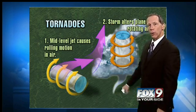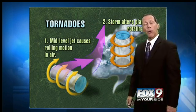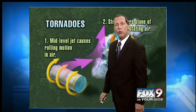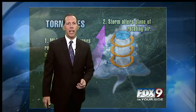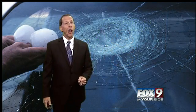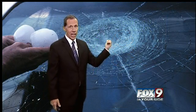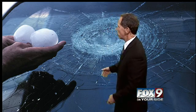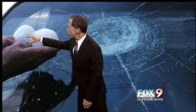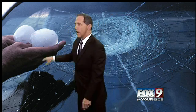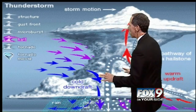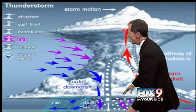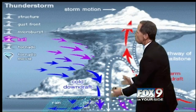Now with thunderstorms and those strong updrafts, you can get hail — and large hail indeed. Look at this picture here: hailstones coming through the car. Here are some pretty big hailstones, almost the size of baseballs.